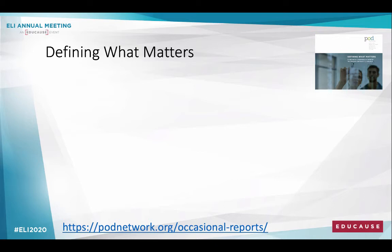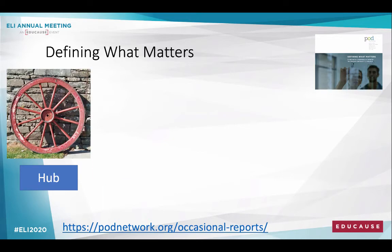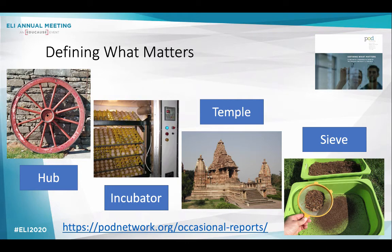A group of POD members collaborated on this document to use these four lenses, or what I call four metaphors, for evaluating key possible dimensions of a center's work. They are the hub, the incubator, the temple, and the sieve. These are derived from a heuristic developed by others to categorize the literature on purposes of higher education. Although many CTLs will see all of these dimensions in their work, no one center should have to encompass all of these functions, and some centers may see other dimensions. Because each center is unique, this provides the most open way for a center to be able to tell its story.